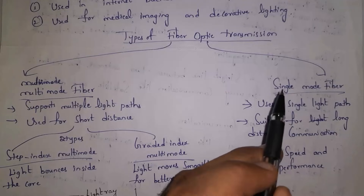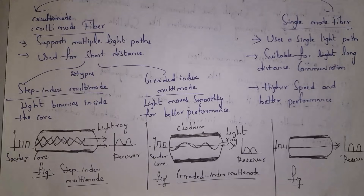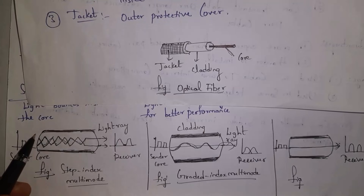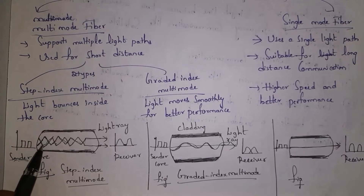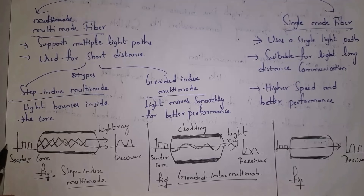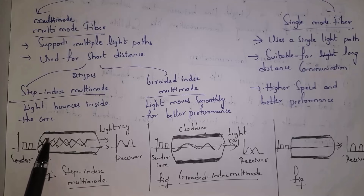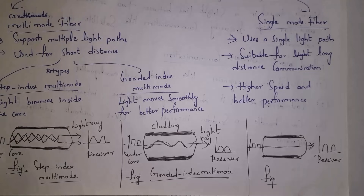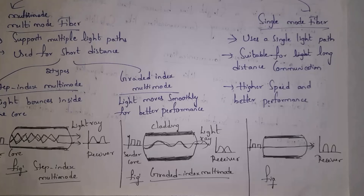Fiber optic transmissions are classified into two types: multimode fiber and single mode fiber. In multimode fiber there are multiple light waves, and it is used for shorter distance communication. Multimode fiber has two subtypes: step index multimode, where light bounces inside the core, and graded index multimode, where light moves smoothly for better performance. In graded index, light rays pass more smoothly inside the core.